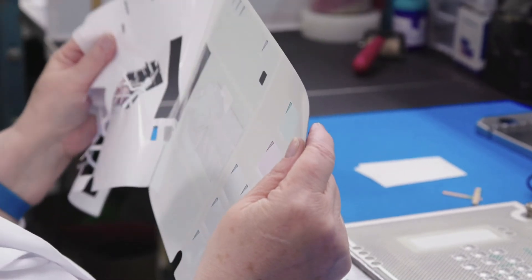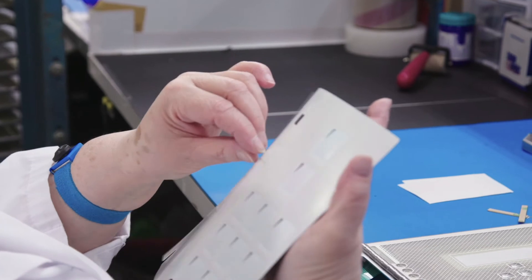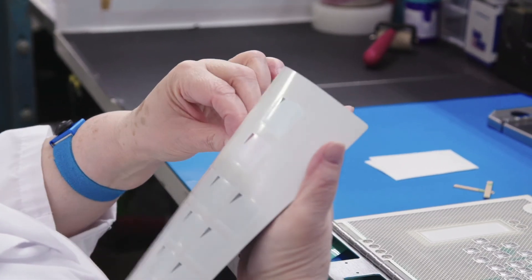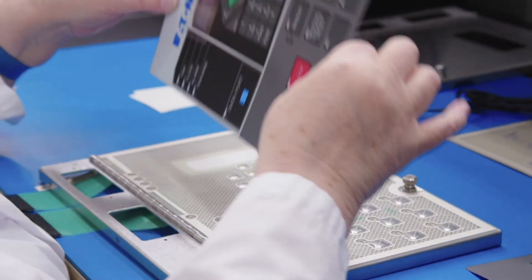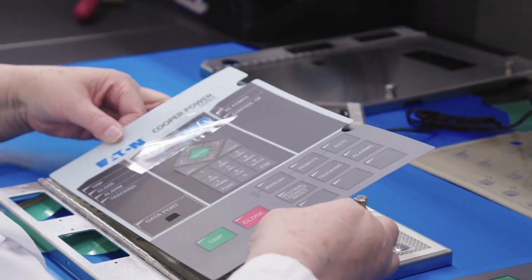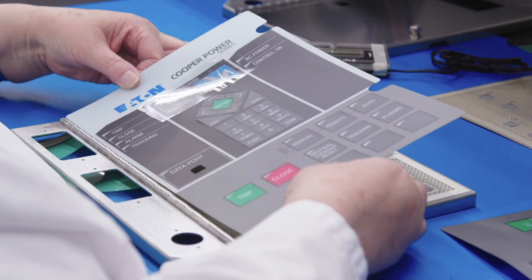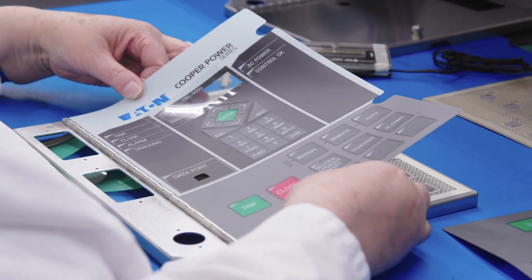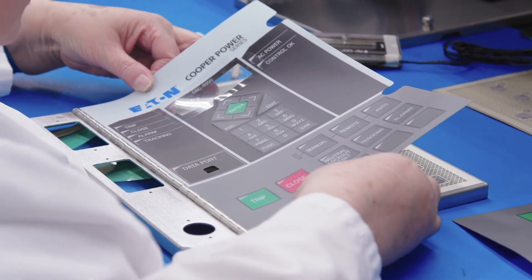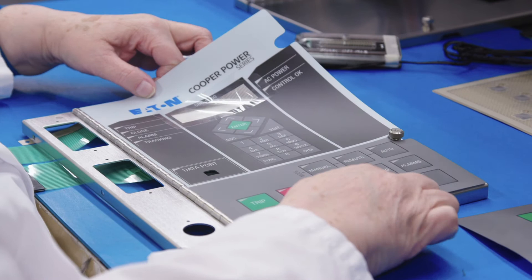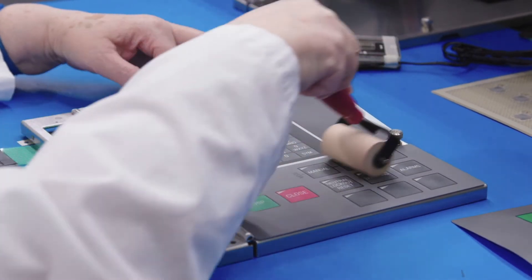Once the release liner on the mounting adhesive is removed, the assembler aligns the edge of the overlay with the edge of the membrane switch. You are able to quickly pull it up and replace it, like is being demonstrated here, and then again, with a soft rubber roller from the bottom to the top, holding the corner up so that there's a place for the air to escape at the very end.